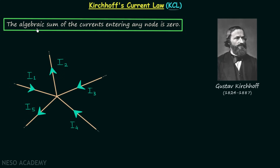According to KCL, the algebraic sum of the currents entering any node is zero. The algebraic sum is the aggregation of two or more quantities taken with regard to their sign. So here we are calculating the algebraic sum of the currents, meaning we calculate the sum of currents with their signs, and at any node that sum equals zero.